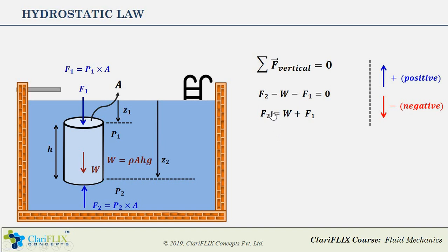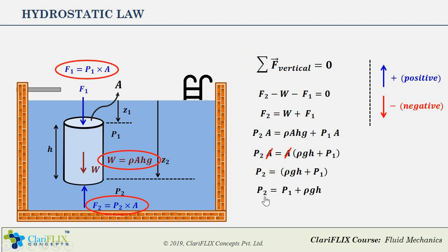Now substituting the values of F1, F2, and W in this equation, we have P2A equals ρAhg plus P1A. Taking A common from the right hand side, we have P2A equals A times (ρgh plus P1). A gets cancelled from both sides, and finally P2 equals P1 plus ρgh.